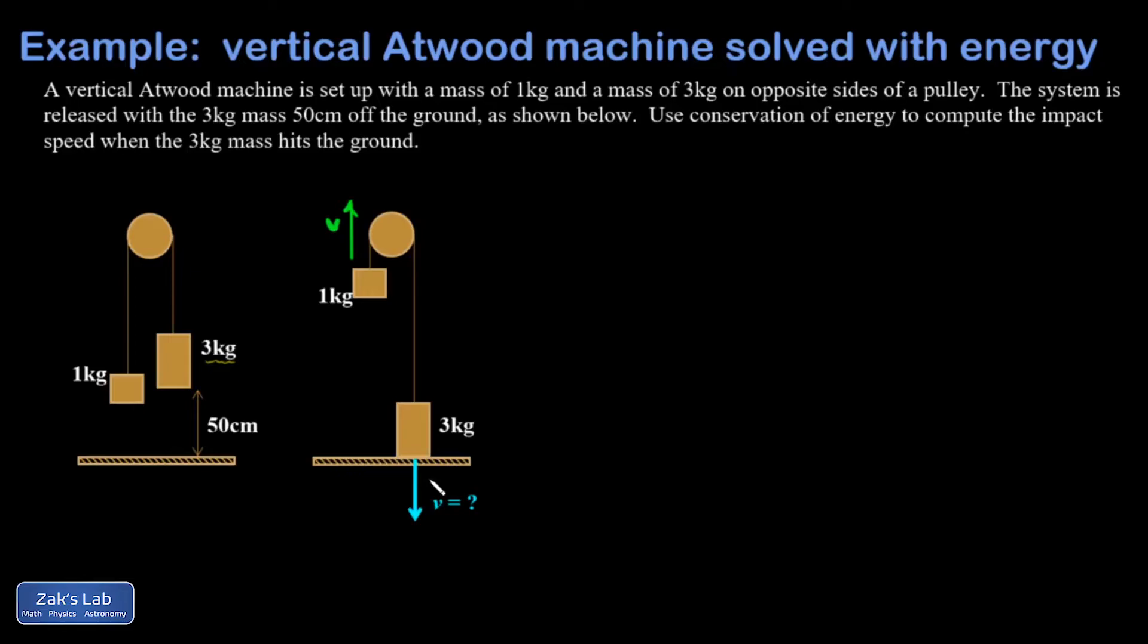So I'm going to start writing down changes in energy for everything. And what I'm going to do for the analysis of the one kilogram mass, I'm going to say that it started at y equals zero, and it went higher. It ended at y equals 50 centimeters or 0.5 meters. So I hope that makes sense. If the three kilogram moved downward by 50 centimeters, the one kilogram had to move upward by 50.